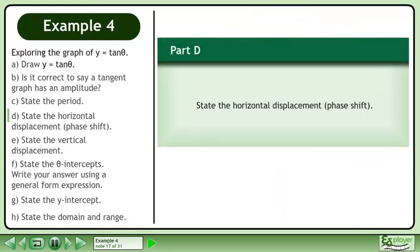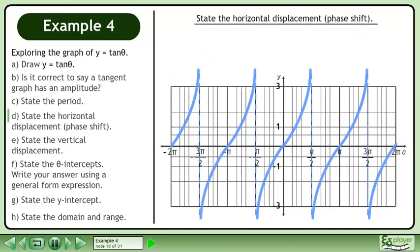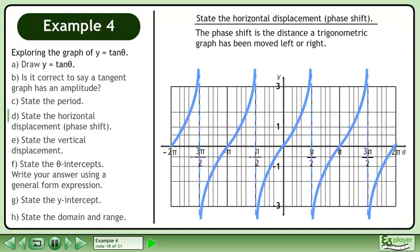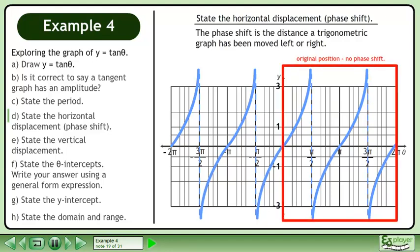In part d, state the horizontal displacement. The phase shift is the distance a trigonometric graph has been moved left or right. The tan graph is in its original position, so there is no phase shift.